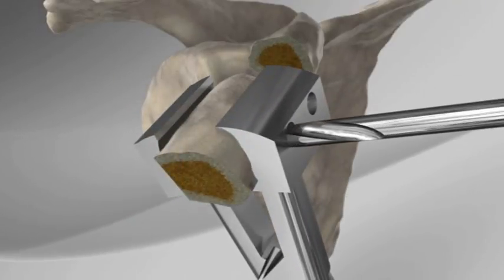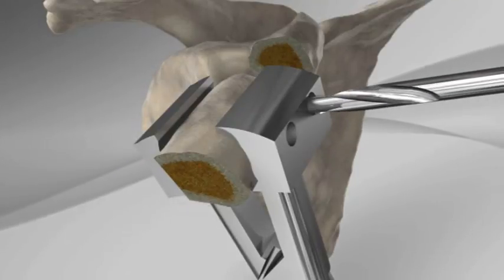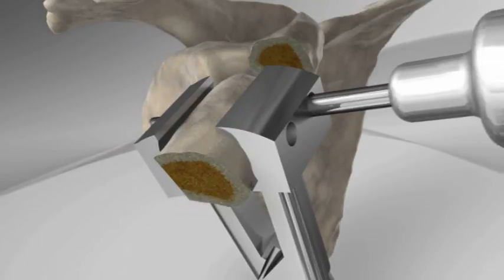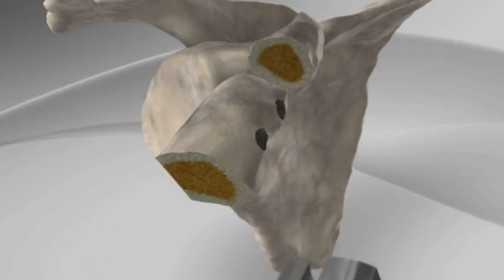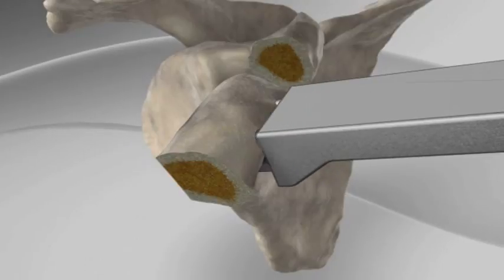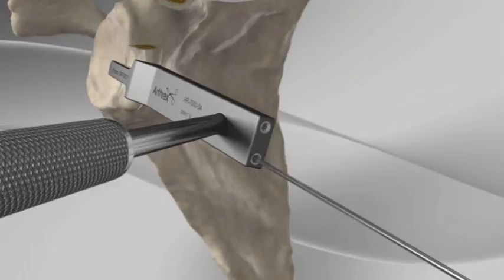A graft holder is used to steady the bone block, and a drill is used to pre-drill holes through the graft. The bone block is placed on a guide, which ensures proper placement on the glenoid, and is pinned in place.